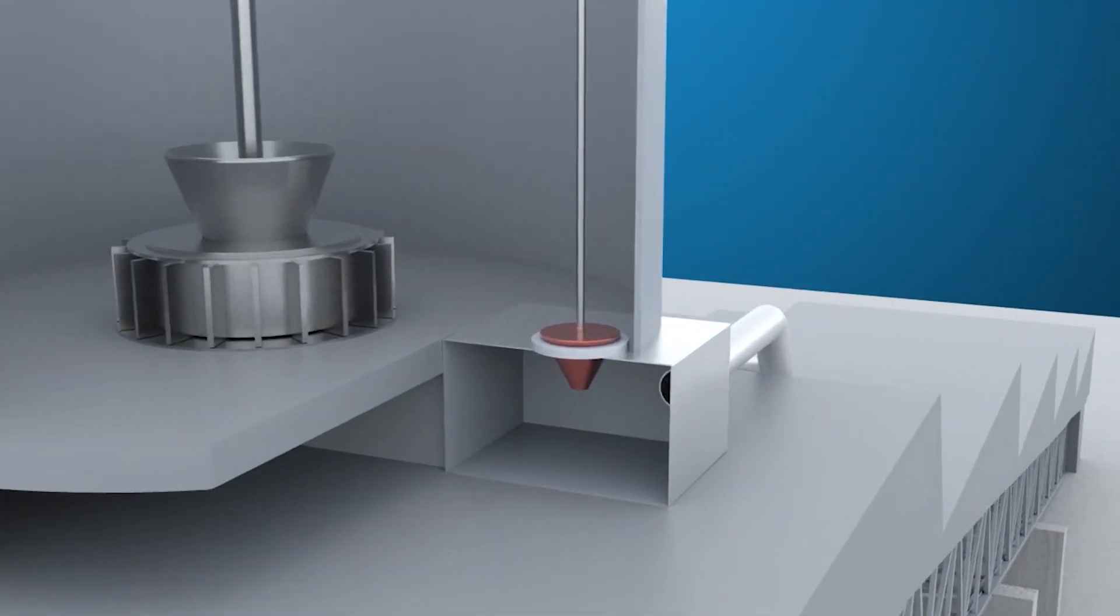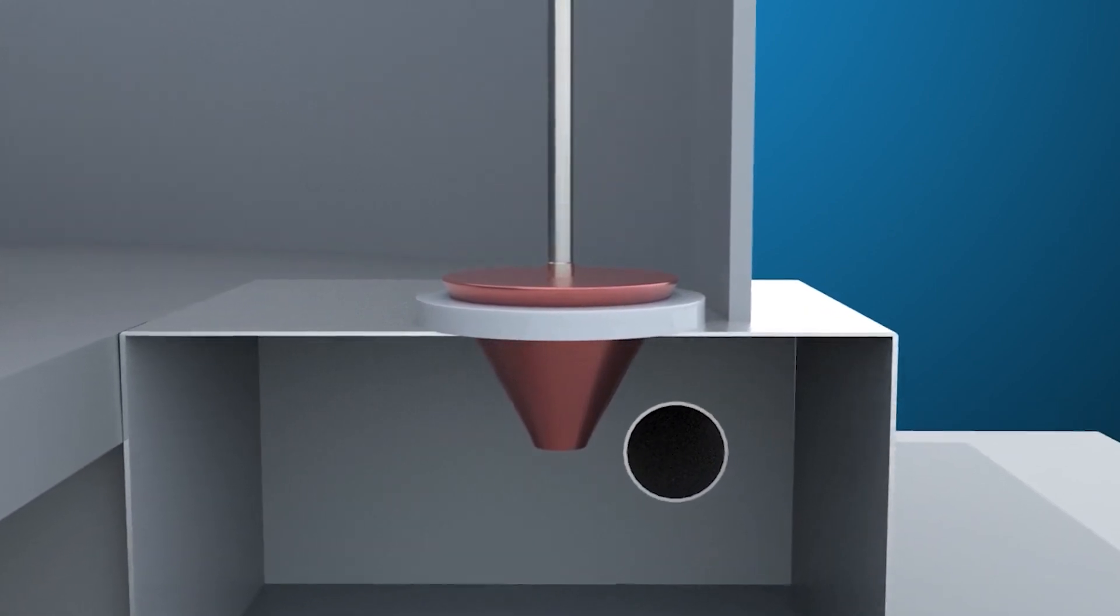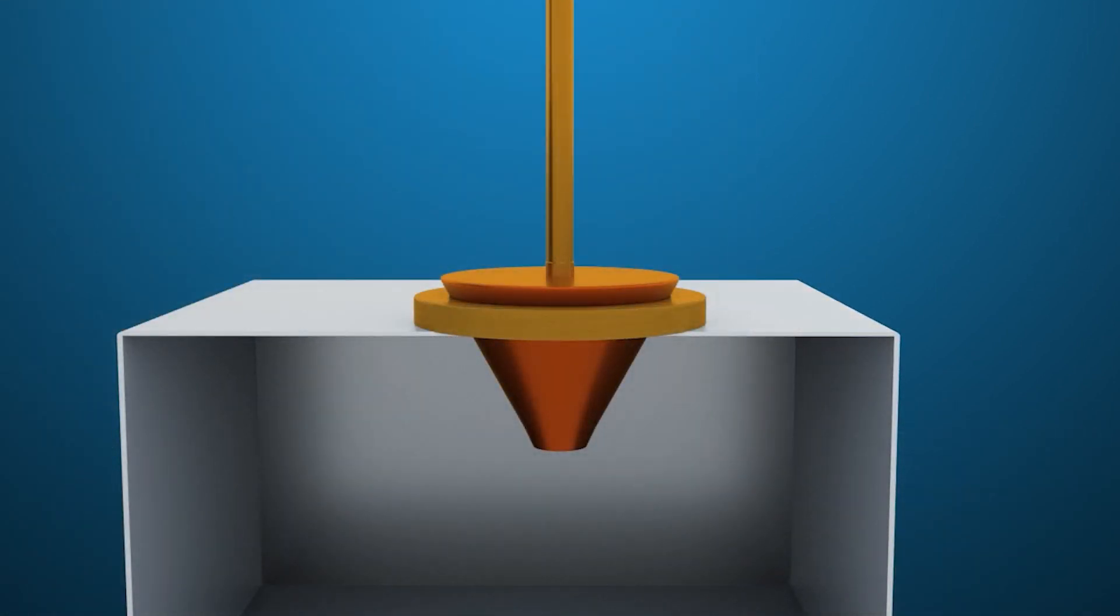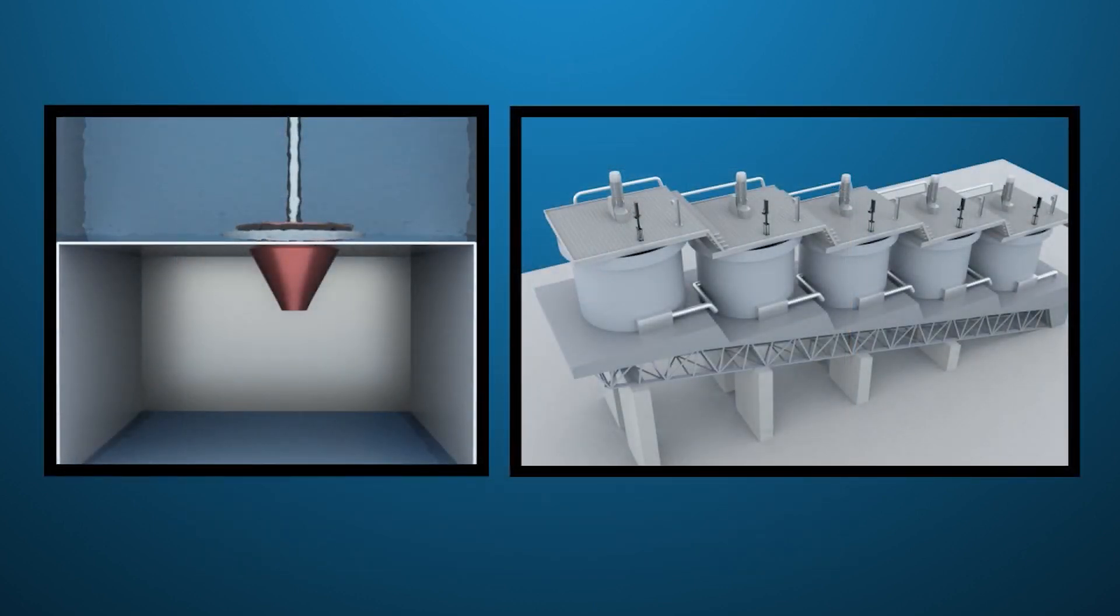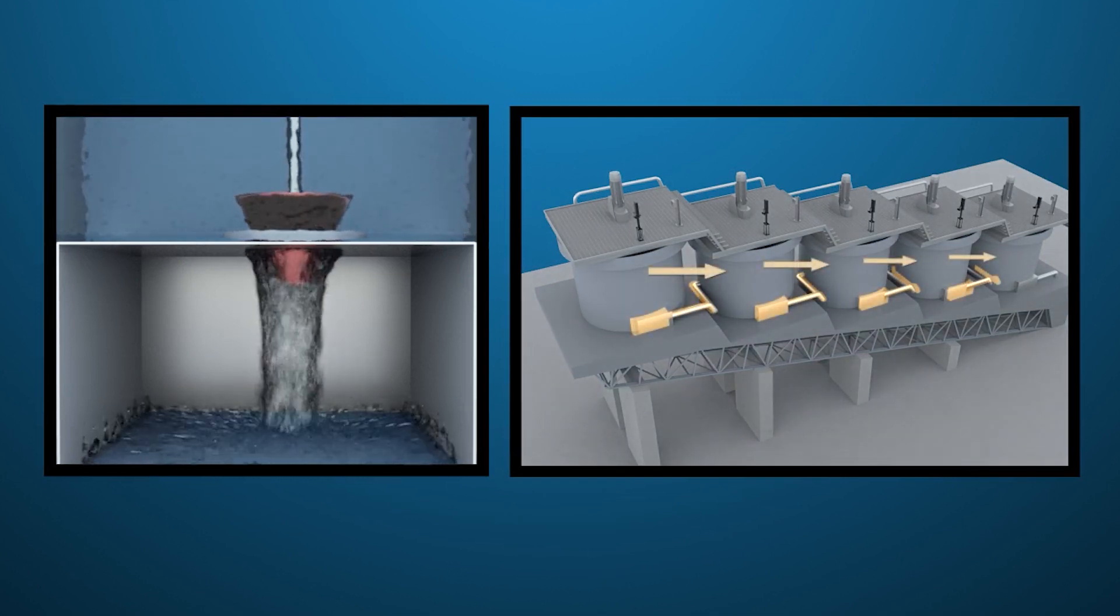The flotation cell level control system at the copper concentrator is a critical process. It must operate efficiently for the plant to separate valuable ore from gang or non-valuable materials. Dart valves within the flotation cell are responsible for maintaining pulp level and flow from one cell to the neighboring cells.